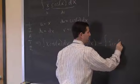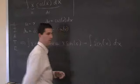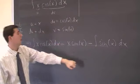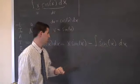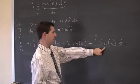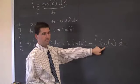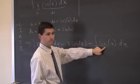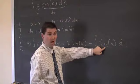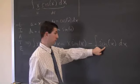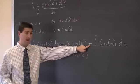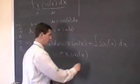Sure enough, we have simplified our integral. Instead of having x times cosine of x, we just have sine of x. The antiderivative of sine of x is negative cosine of x. So the integral will be negative cosine of x plus c. We have x sine of x minus, and then negative cosine of x, so it becomes positive cosine of x.